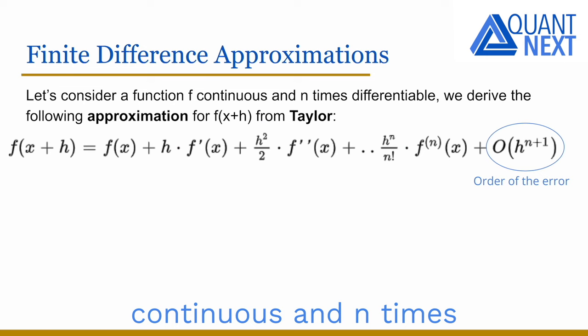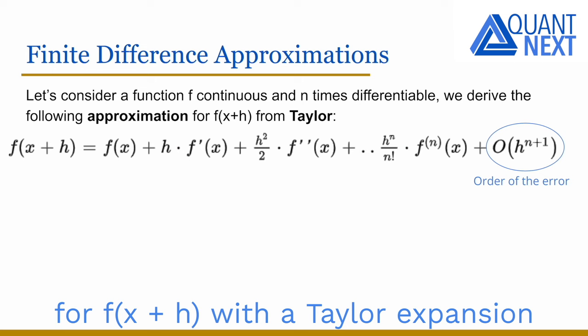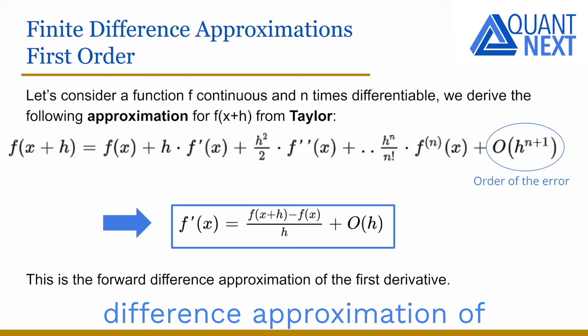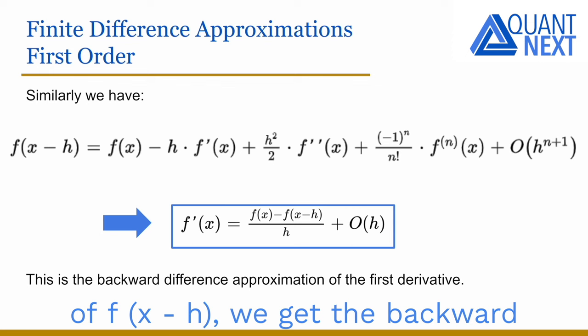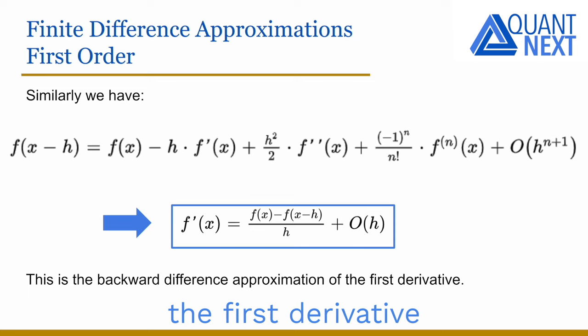Let's consider a function f, continuous and n times differentiable. We derive the following approximation for f(x+h) with a Taylor expansion and we get the forward difference approximation of the first derivative. Similarly, from the Taylor expansion of f(x-h), we get the backward difference approximation of the first derivative.